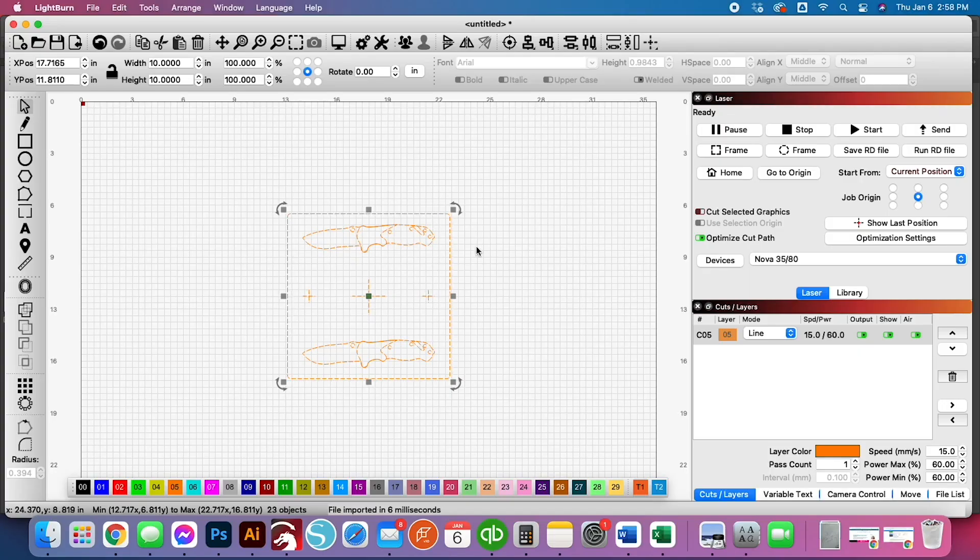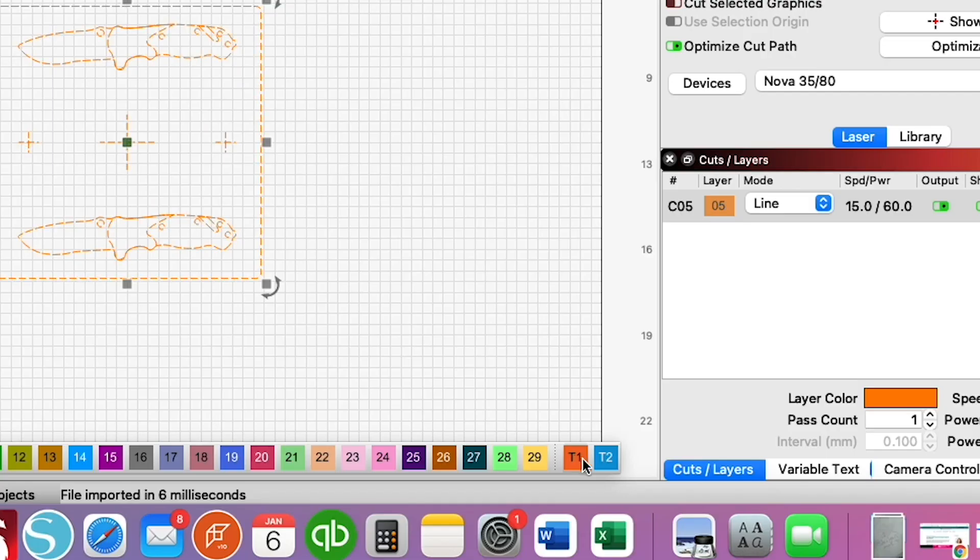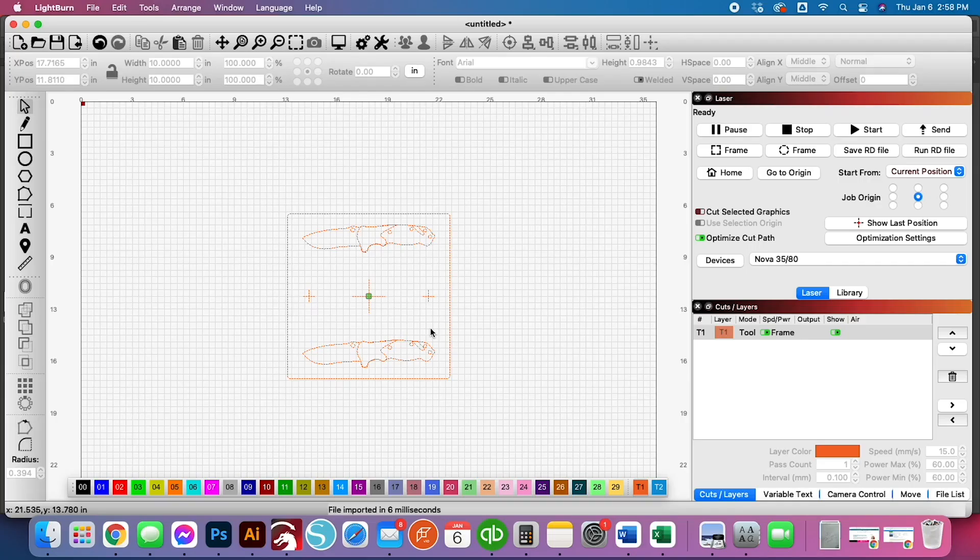So now we have imported that file into Lightburn. When you open it up, you'll see here that it actually has it set for a line. We are going to change all of this to a tool. So while it's all selected here, we're just going to select one of the tools. We'll select the orange tool. That way by selecting a tool, nothing actually cuts or gets engraved or anything like that. It's basically ignored with the laser, but yet it keeps your dimensions and everything. That's why we can work off of this and work off of centered.